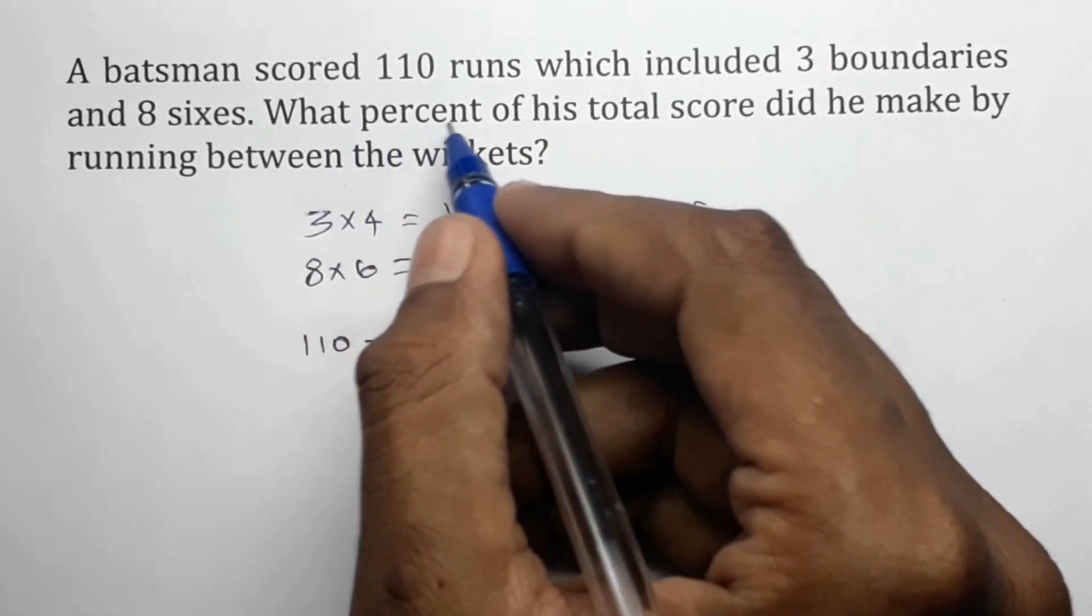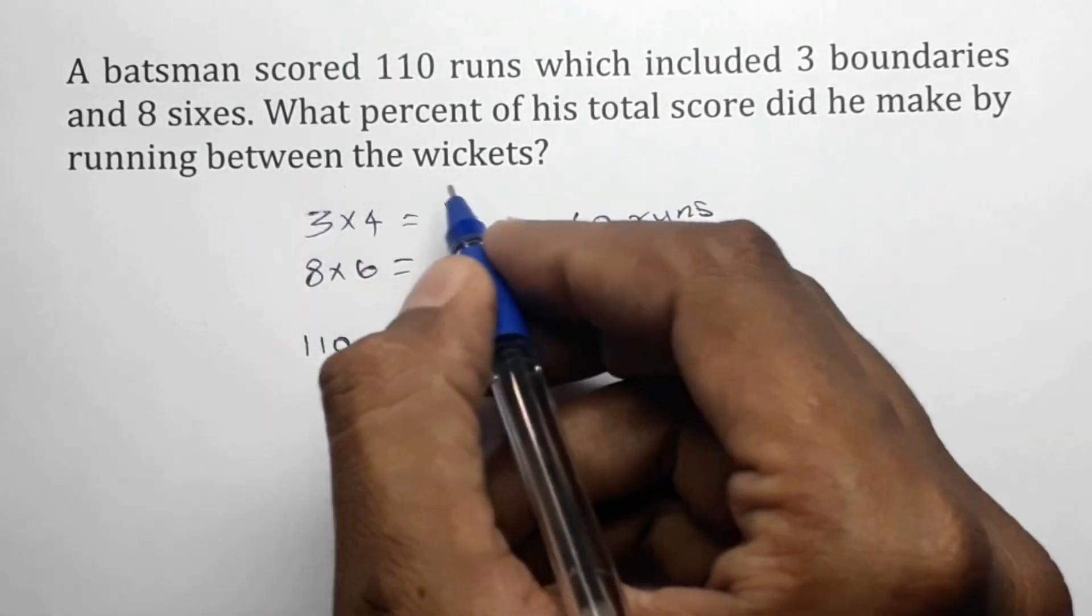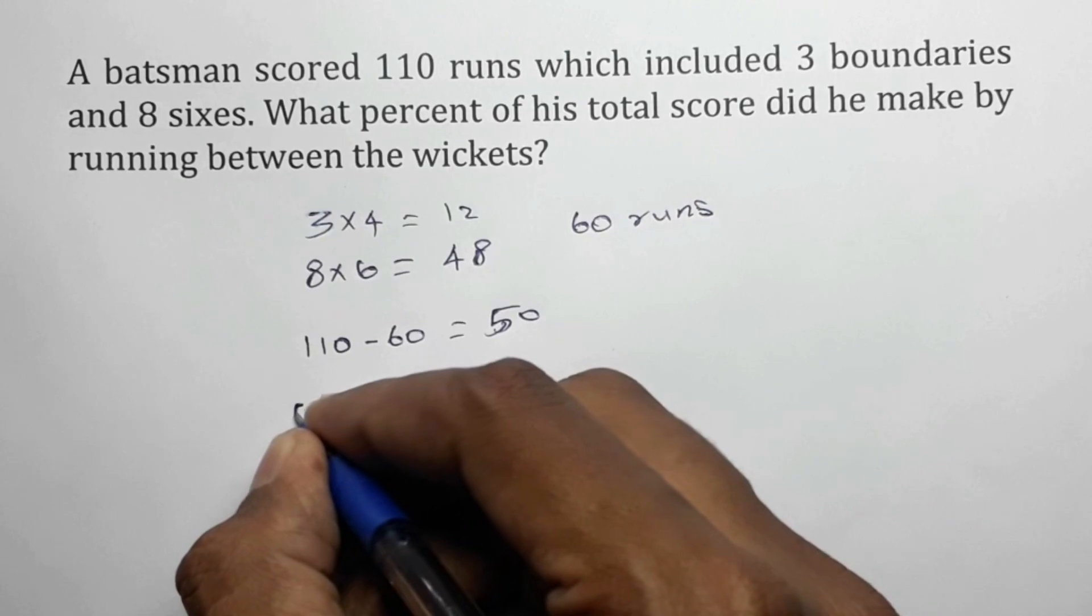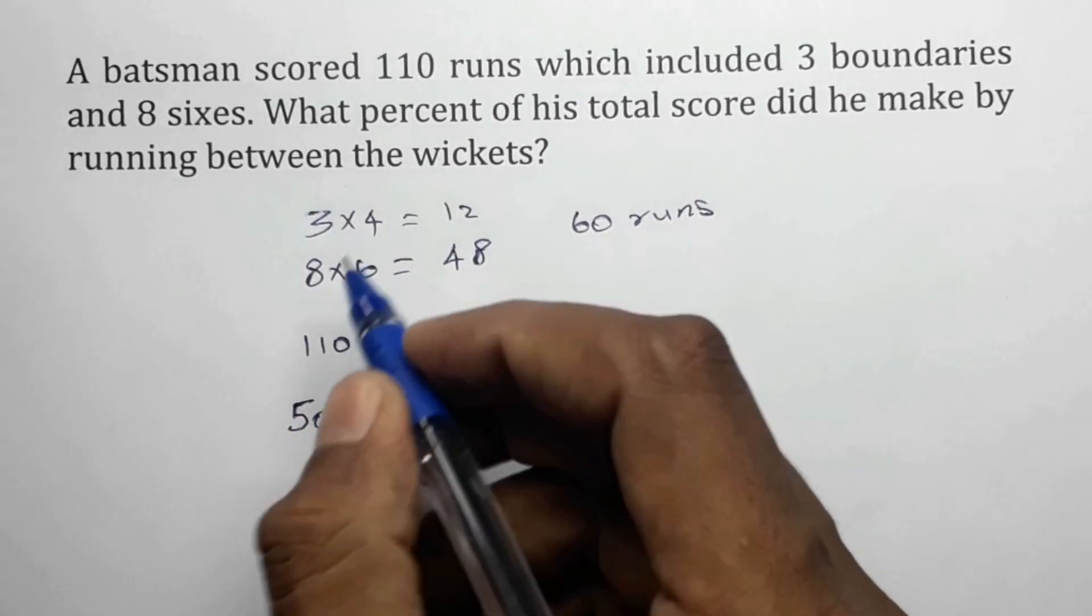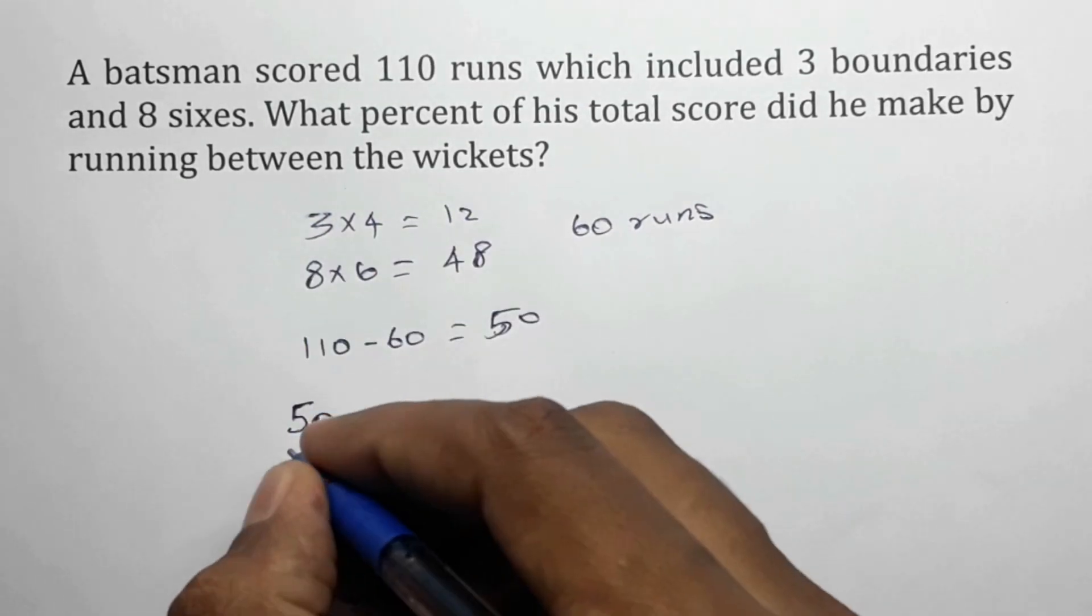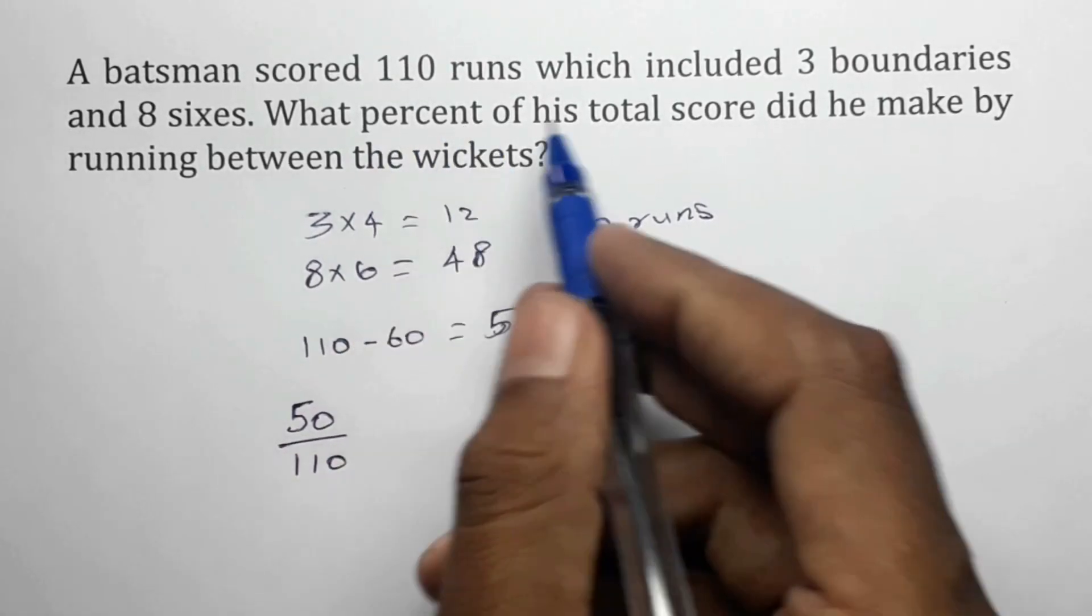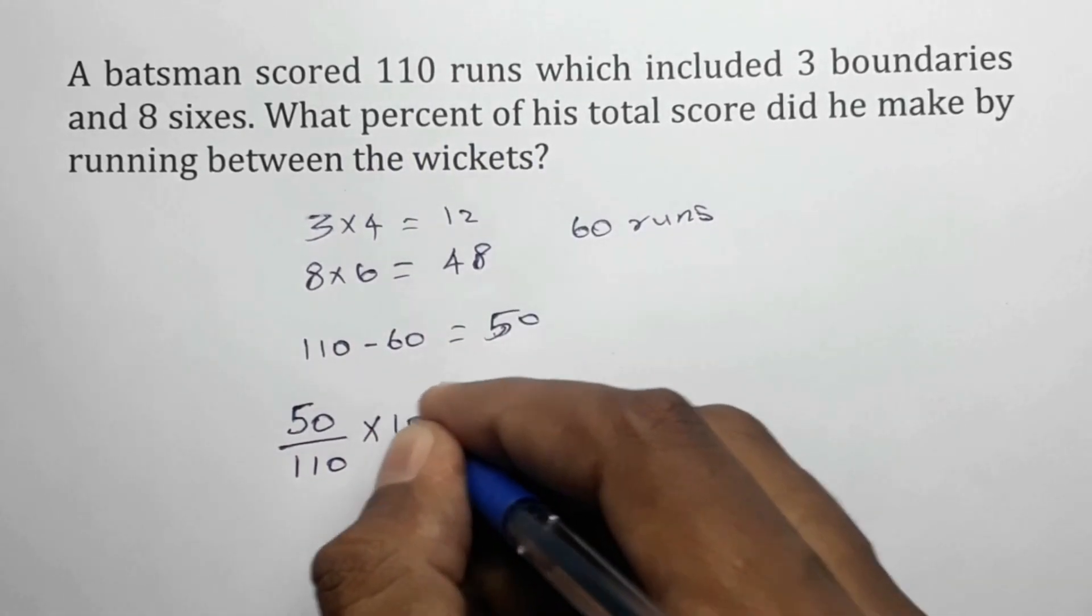We have to calculate the percentage of total score by running between the wickets. He scored 50 runs by running between the wickets out of a total of 110. To calculate the percentage, we multiply by 100.